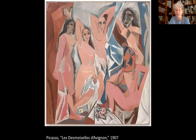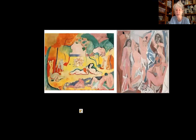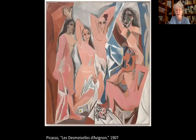Picasso at least acknowledges Matisse in this painting — he's referencing him. See this woman in Matisse's painting with her elbows up in the air? Picasso has referenced that woman in his own painting. There are five women in his painting and they each reference something different. One of them is almost like saying, 'Matisse, I saw your painting — and this is my answer.' But what about these three women with the weird heads?